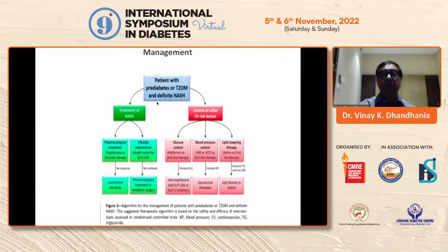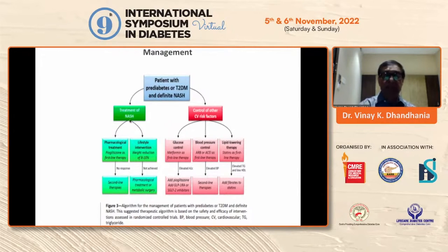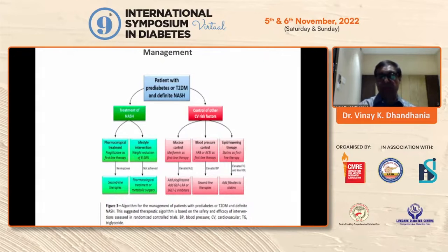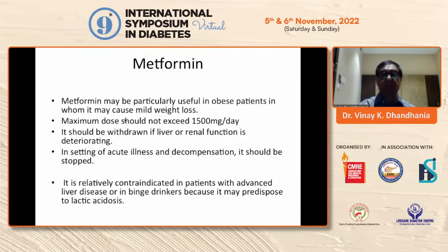The management flowchart emphasizes treatment of NASH and control of other cardiovascular risk factors as very important. If treated intensively at an early stage, we can actually prevent the progression from NASH to fibrosis, to cirrhosis of liver, and to hepatocellular carcinoma.